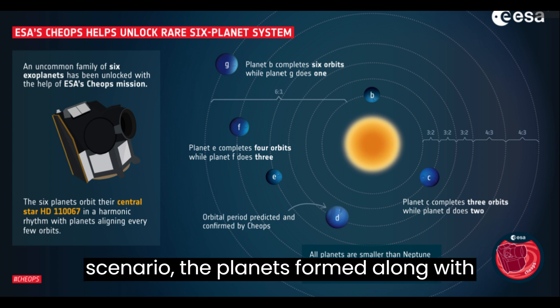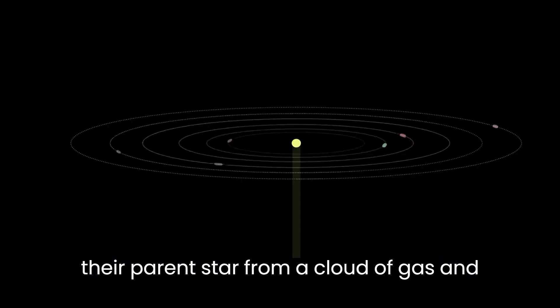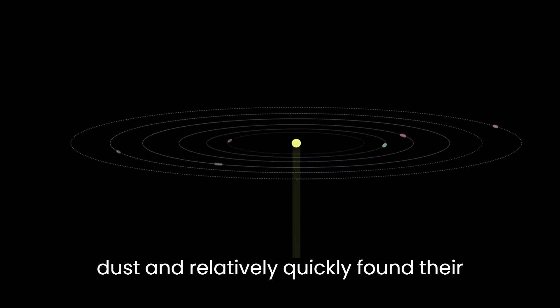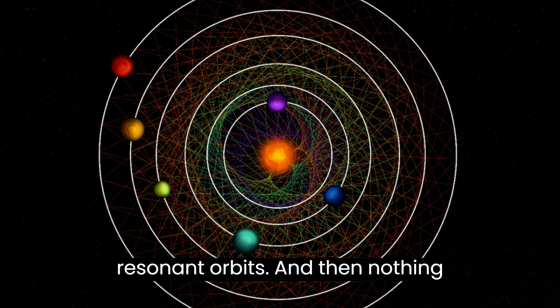In this scenario, the planets formed along with their parent star from a cloud of gas and dust and relatively quickly found their resonant orbits. And then nothing exciting happened to change that.